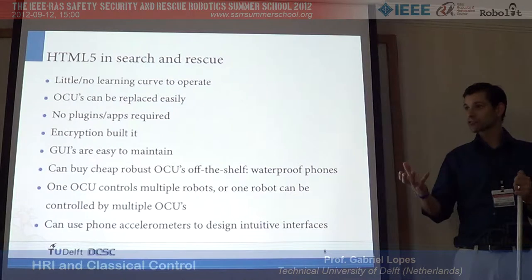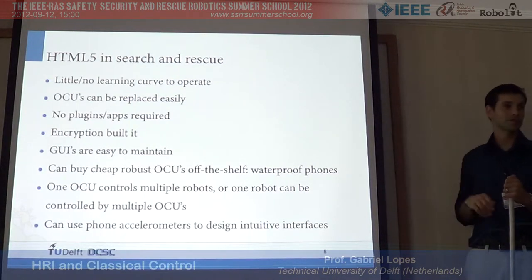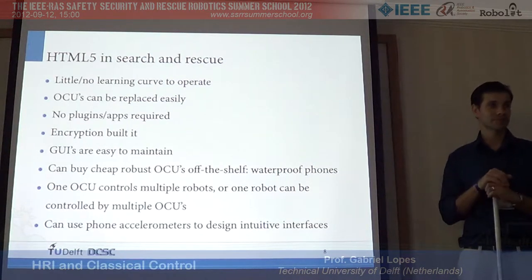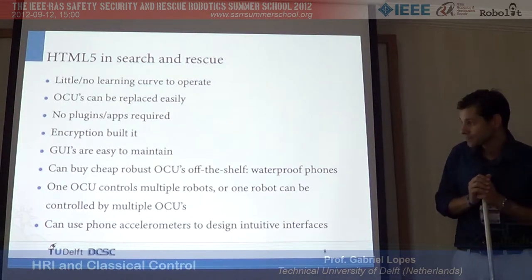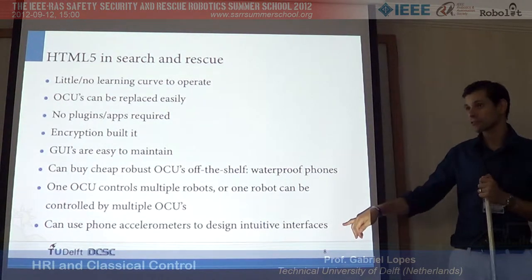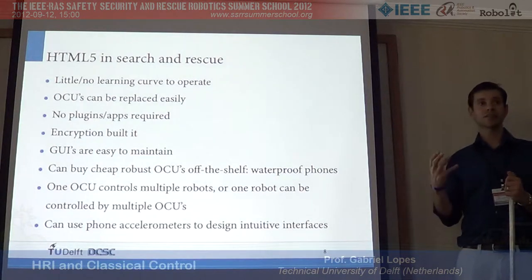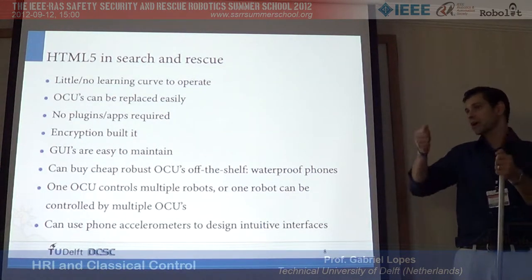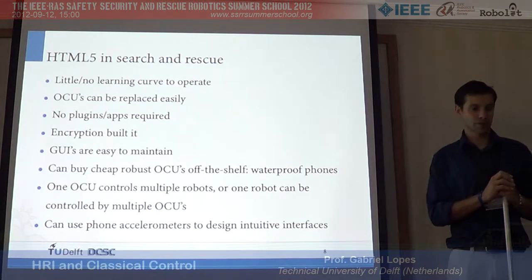You can be controlling the robot while your boss overlooks and can override, etc. — it's all the web. You can use full phone accelerometers, taking advantage of the sensors of your device so that you can steer by rotating the device, for example.